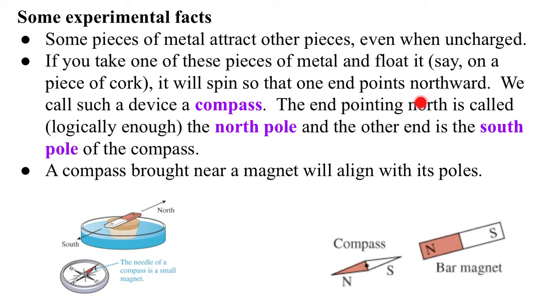The end that is pointing towards the north is called, logically enough, the north pole, and the other end is the south pole of that compass. And a compass brought near some other magnet will align with its poles.